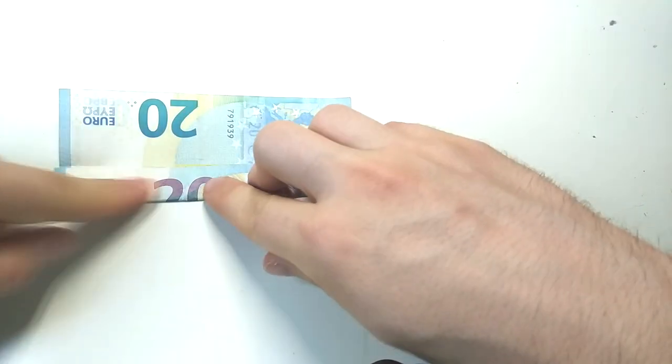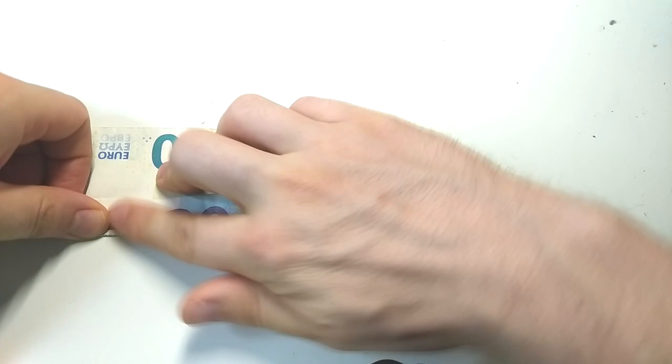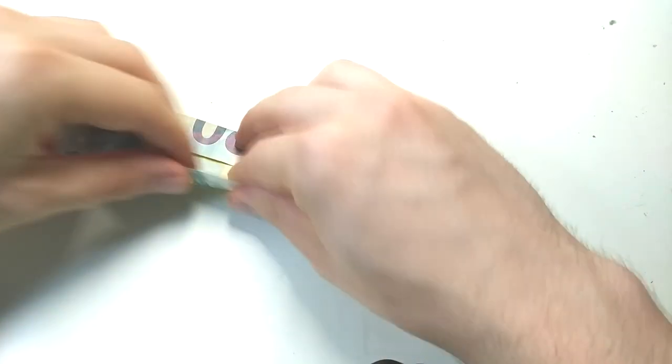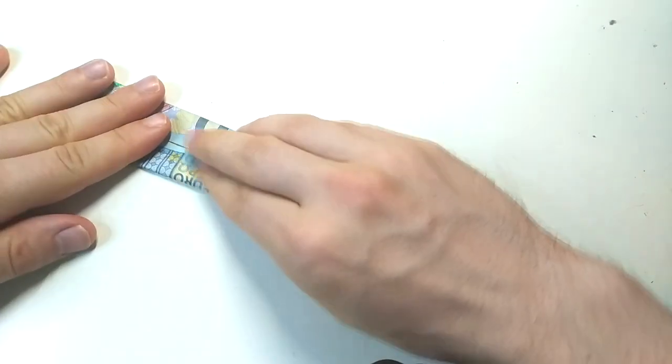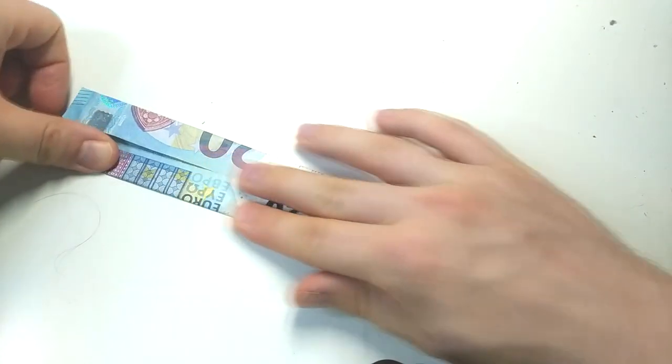Then fold the outer edges inwards so it becomes like a book or a birthday card—it looks a little bit like a door. Fold towards the center and make sure to leave a little gap, then fold them over.